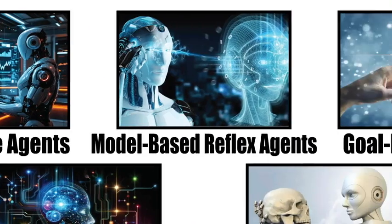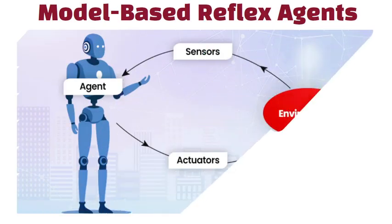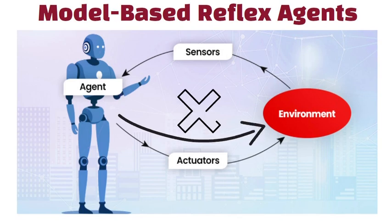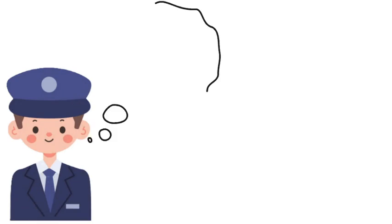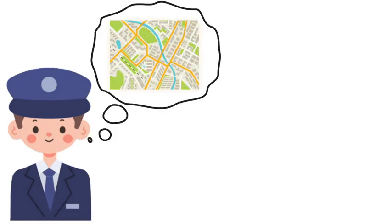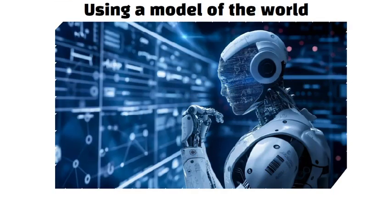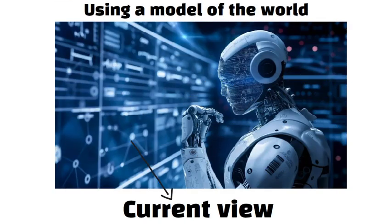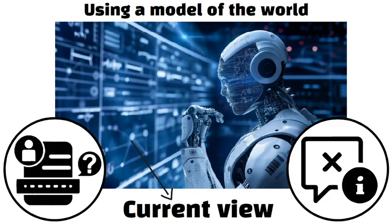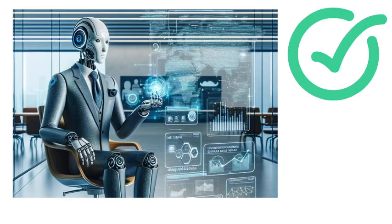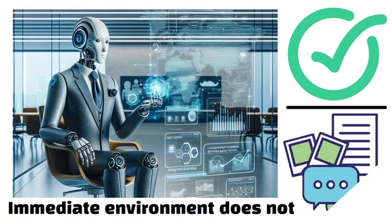Model-based reflex agents add an important twist. They maintain an internal state that helps them keep track of parts of the world that they cannot see directly. Picture a driver who remembers the layout of a city even when they are on a long journey through unfamiliar streets. By using a model of the world, these agents can make better decisions when the current view is incomplete or misleading. This internal model allows them to react more appropriately, even when the immediate environment does not tell the whole story.